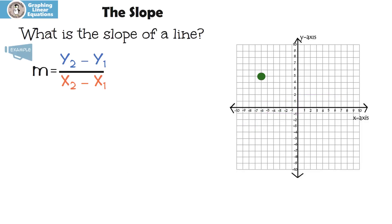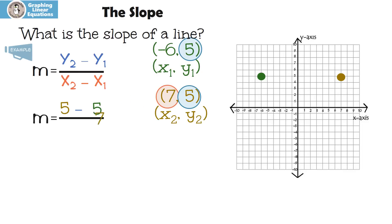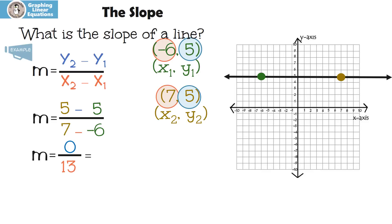Let's try another one. Here's my first point, x1, y1, and here's my second point, x2, y2. Let's do the formula: y2 minus y1 over x2 minus x1. Five minus five is zero, and seven minus a negative six is 13. Any time we have zero over a number, that actually turns out to be zero. When we draw our line, the slope isn't going anywhere — it's straight across, so that gives us a zero slope.